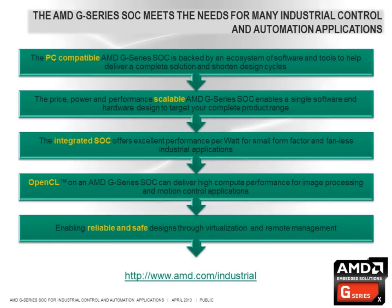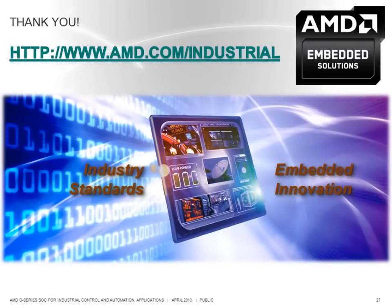To summarize, the AMD G-Series SOC meets the needs for many industrial control and automation applications. Its PC-compatible architecture is supported by a strong ecosystem of software and tools to help deliver a complete solution in shortened design cycles. The scalable SOC solution enables a single software solution and/or hardware design to meet the needs for multiple products in an OEM's portfolio. The highly integrated solution delivers excellent performance per watt for small form factor and fanless designs. Acceleration of functions on the GPU enables high performance in a compact and low power solution for applications like machine vision or motion control, and support for hardware virtualization and remote management helps facilitate reliable system integration and reduce factory downtime. For more information on AMD embedded solutions for industrial control and automation, please visit www.amd.com/industrial.